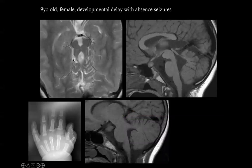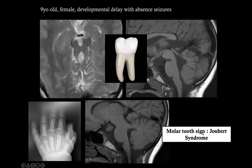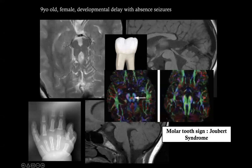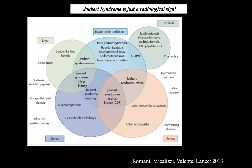Rhomboencephalosynapsis is a malformation where the two cerebellar hemispheres are fused together. We don't know the cause, but it is sometimes associated with Gomez-Lopez-Hernandez syndrome: rhomboencephalosynapsis, scalp alopecia, and trigeminal dysfunction. You put together clinical and radiological findings. Another pattern: the molar tooth appearance on axial midbrain imaging, where the superior cerebellar peduncles are thickened and horizontalized. This is typical of Joubert syndrome, which is also associated with polydactyly. Use DTI — you can see horizontal anterior-posterior tracts without the normal decussation of the superior cerebellar peduncles.